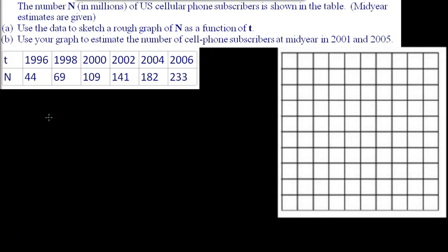So part A says use the data to sketch a rough graph of N as a function of T. Usually we have F as a function of X, and we know that when F is a function of X, that's going to be equal to your Y value. So for this one we're saying N as a function of T, which is also going to equal your Y value.